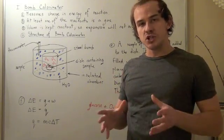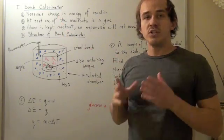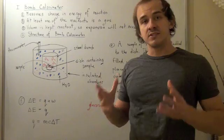And so when we speak about coffee cup calorimeters, we talk about constant pressure. In a bomb calorimeter, we talk about constant volume and pressure is allowed to change.